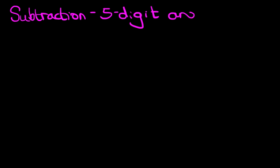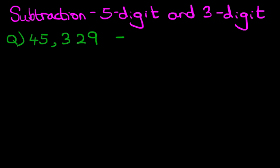Hello and welcome to the tutorial on subtraction of a 5-digit number and a 3-digit number. We're going to do this using the vertical format. So let's have a look at the question we're going to be working through. What is 45,329 - 653?